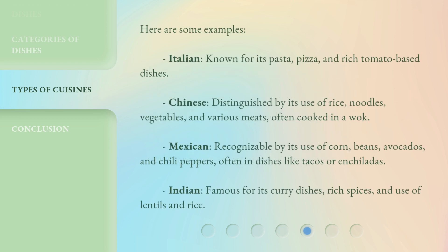Here are some examples. Italian: known for its pasta, pizza, and rich tomato-based dishes. Chinese: distinguished by its use of rice, noodles, vegetables, and various meats, often cooked in a wok. Mexican: recognizable by its use of corn, beans, avocados, and chili peppers, often in dishes like tacos or enchiladas.